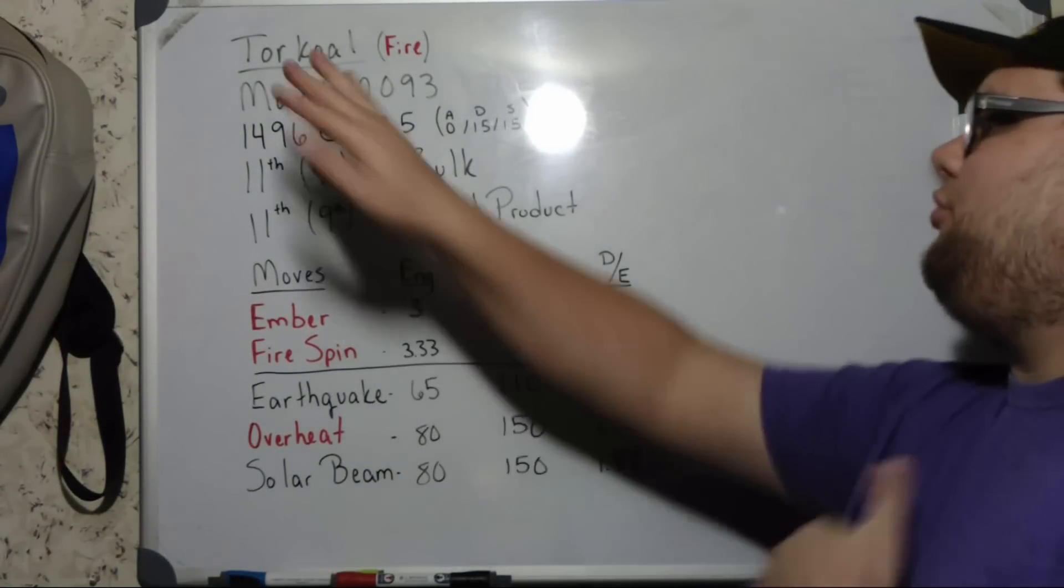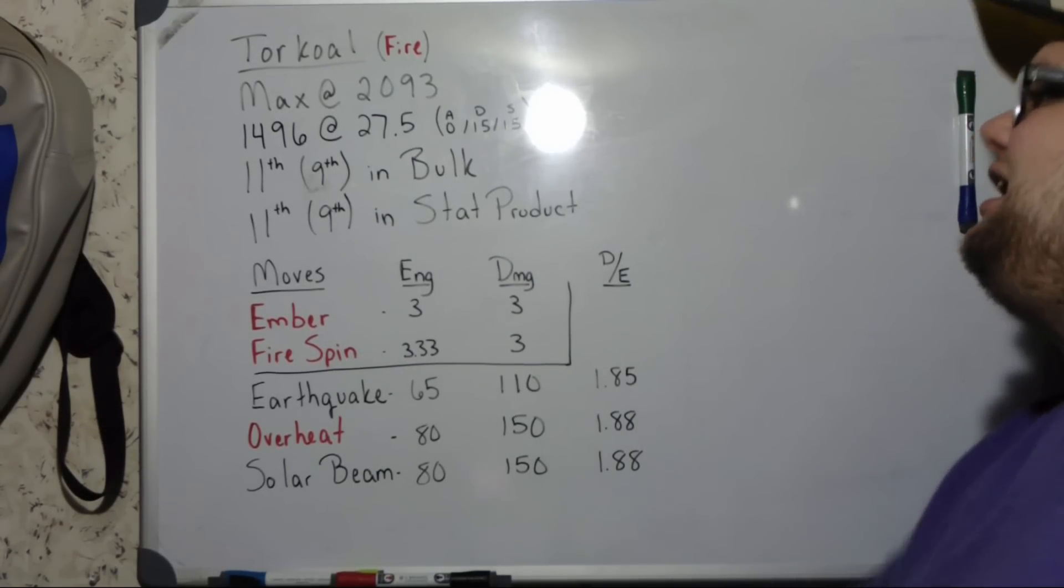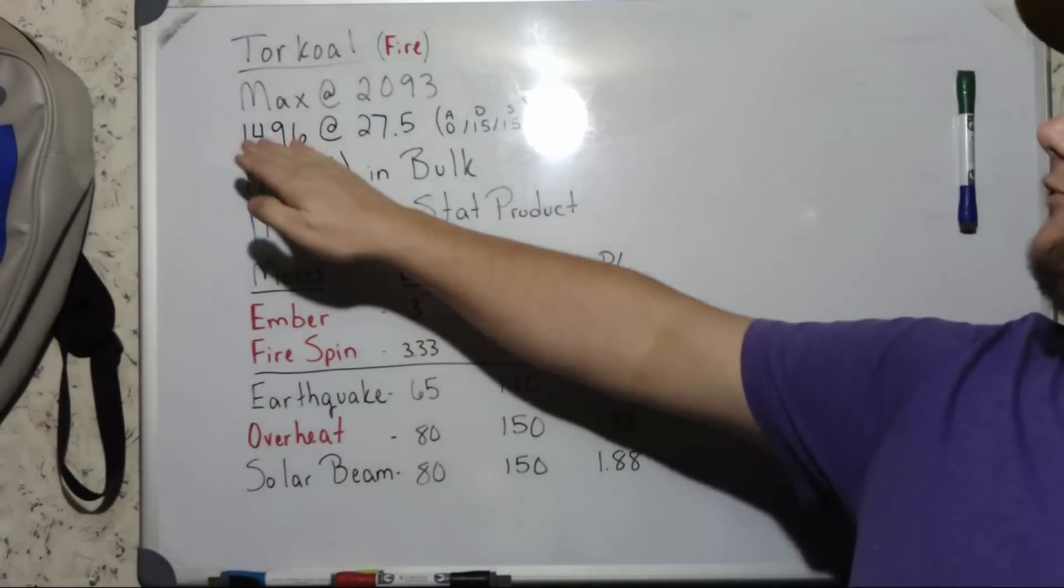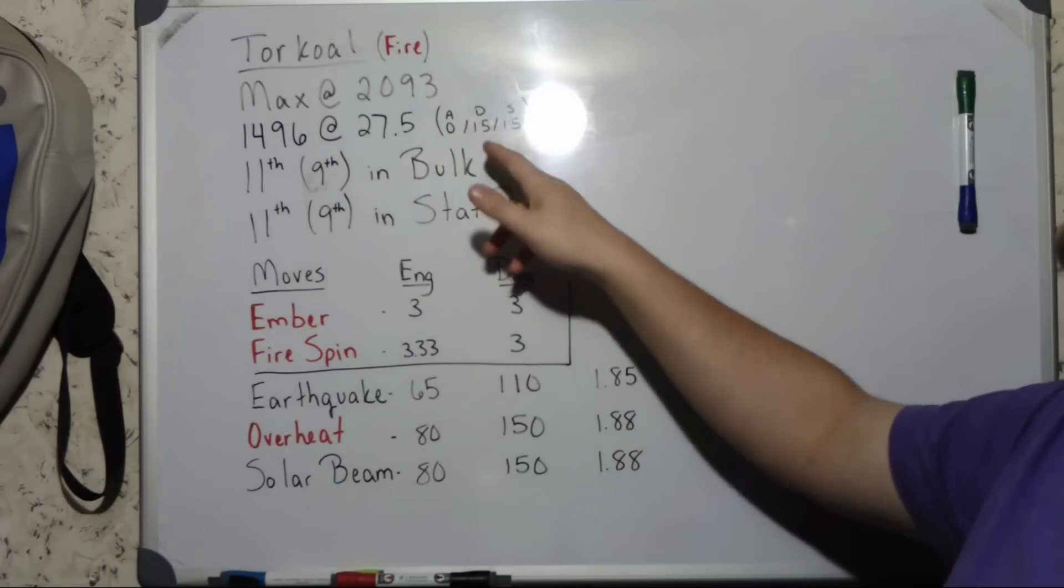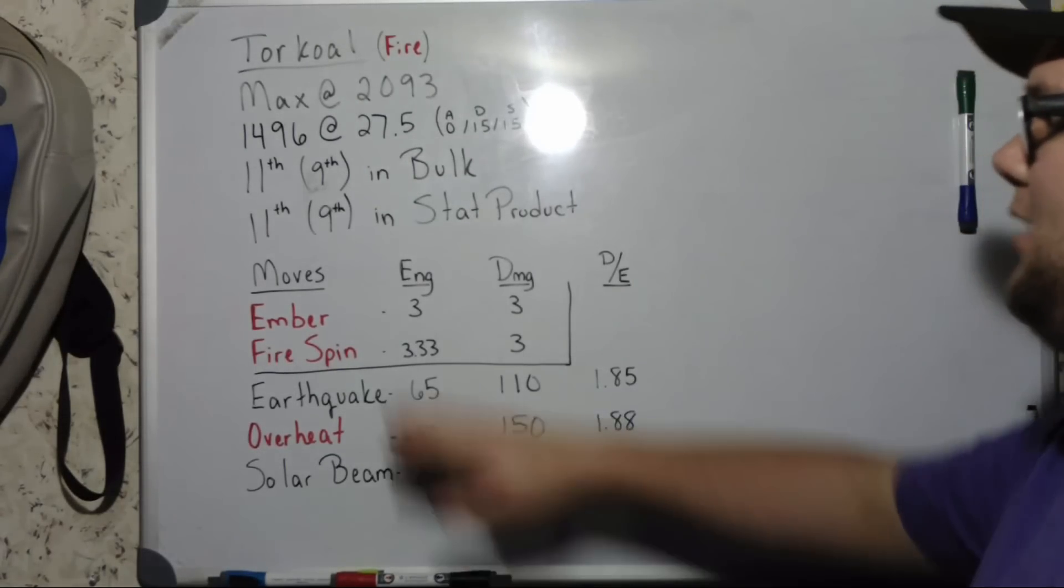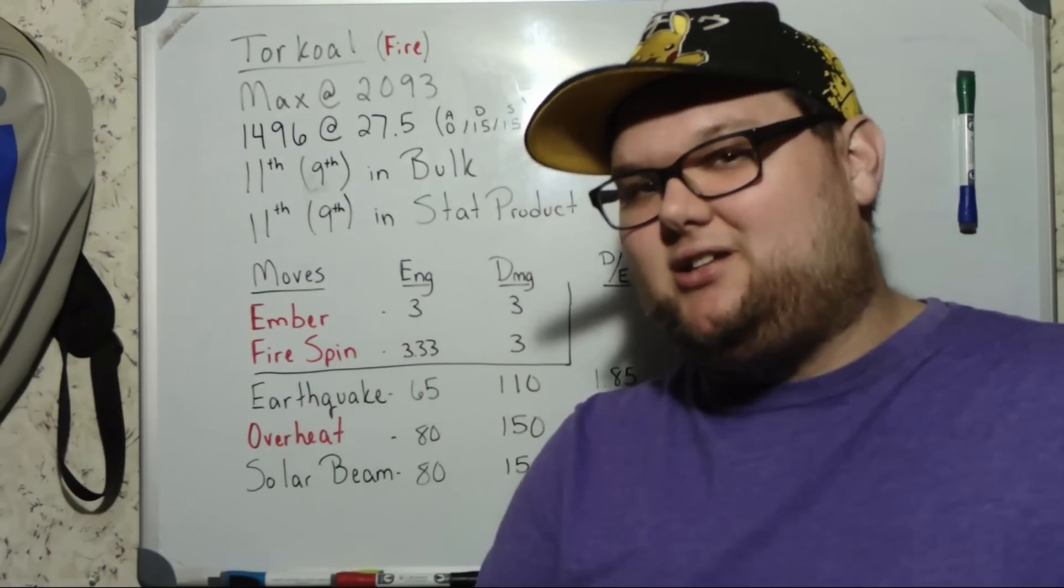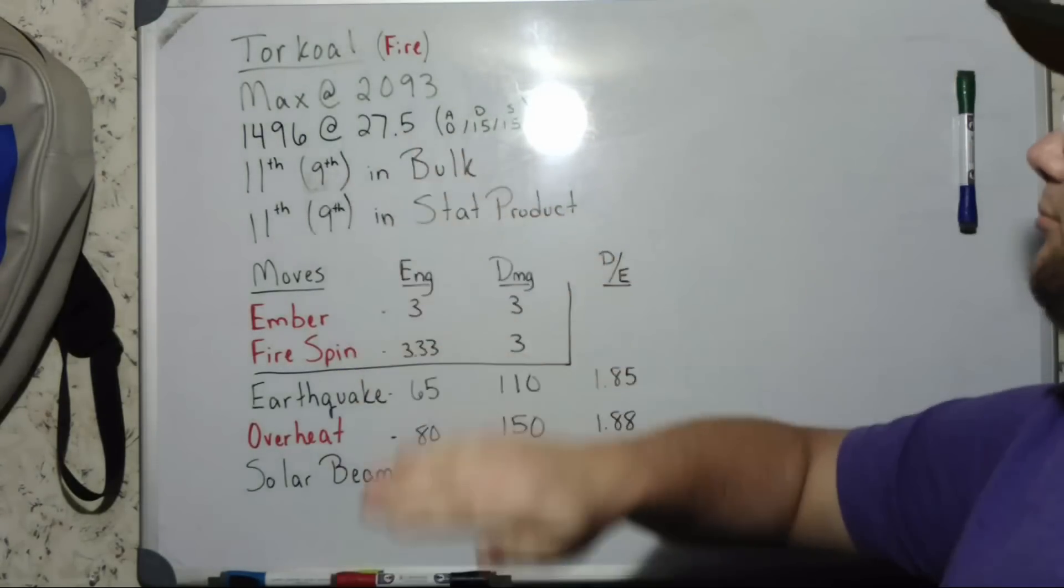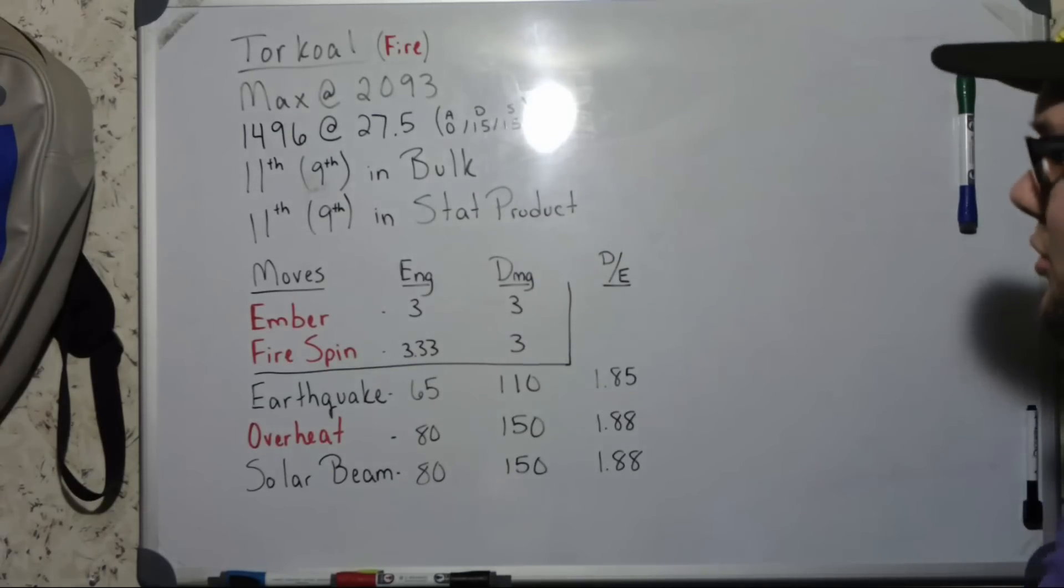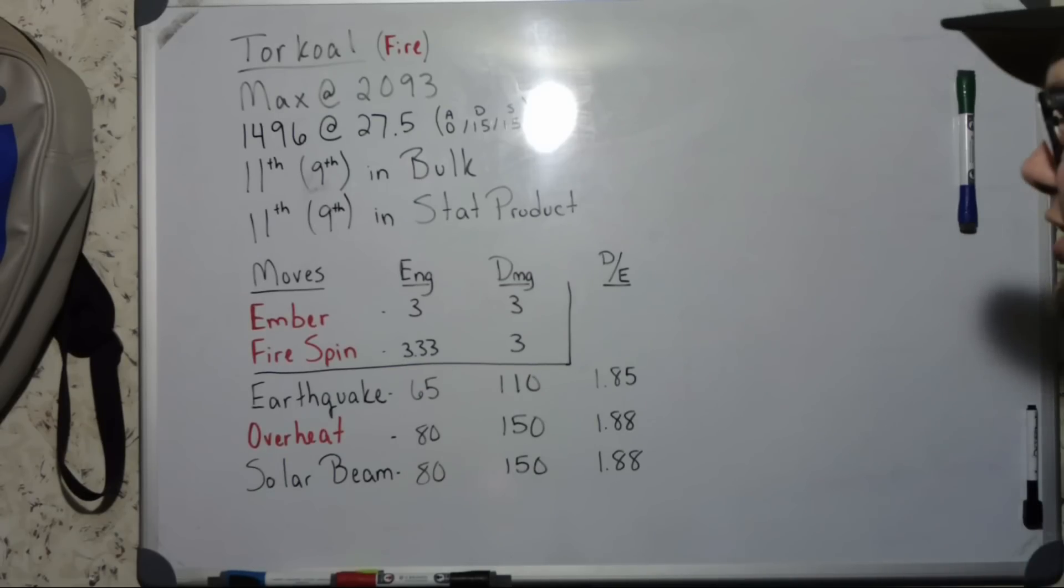Today we are looking at Torkoal, a pure fire type Pokemon maxing out at level 40 with 15 IVs across the board. You can hit 2093 on the CP, so very respectable. You can actually achieve 1496 at level 27.5 if you have zero attack, 15 defense, and 15 stamina. According to my spreadsheets and the math that I have done, Torkoal should rank 11th in bulk technically, but 9th because Probopass is unreleased and Giratina can't make it into great league.